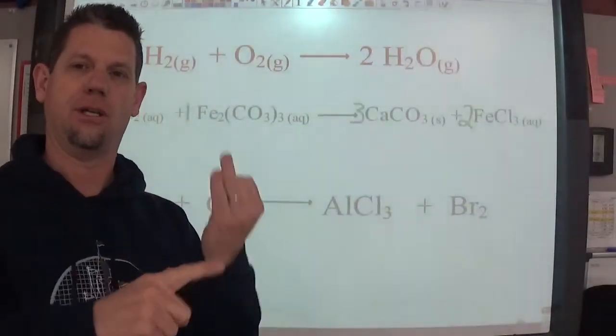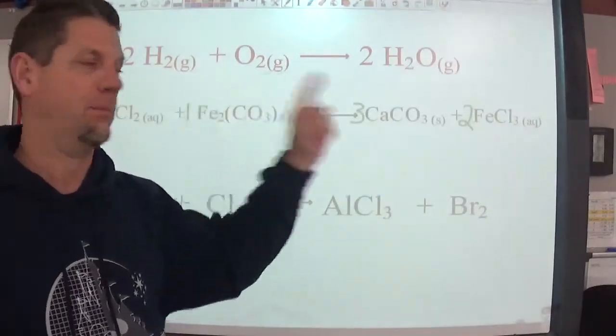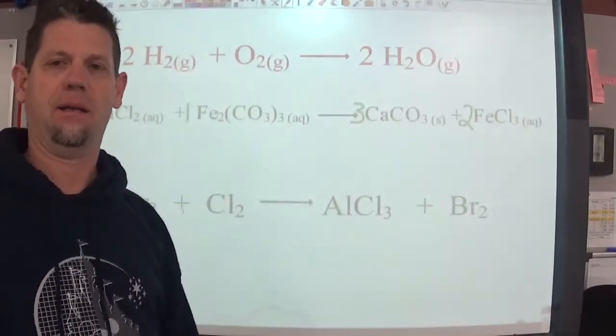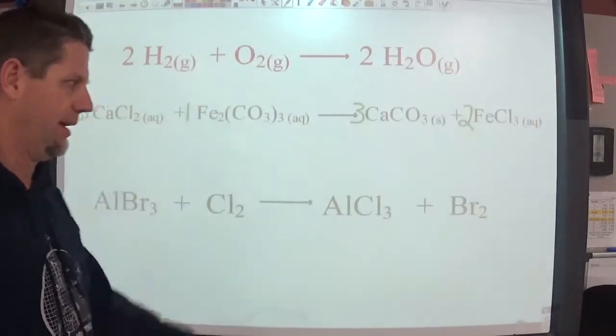Hydrogen, nitrogen, oxygen, fluorine, chlorine, bromine, and iodine all exist in nature as a diatomic molecule. They have a little two.